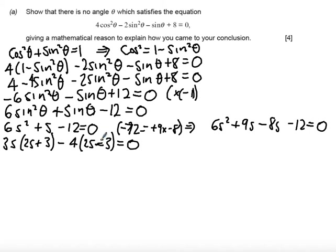The second term if I take out -4 I get also 2s + 3 = 0. That should be a plus 3 there. Finally take the 2s + 3 that is a common factor to both terms. Inside the bracket I get 3s - 4 = 0.